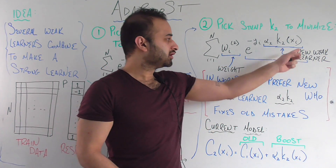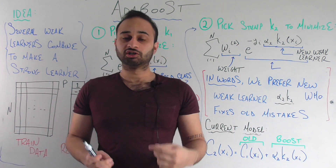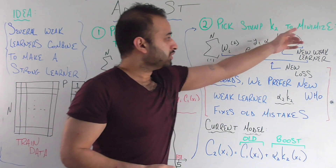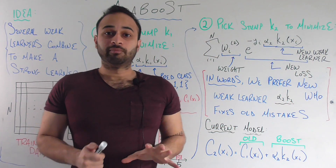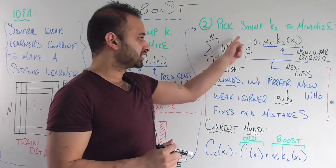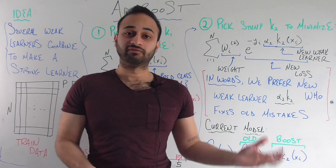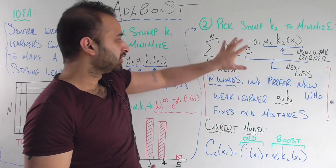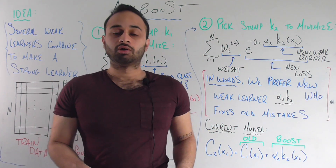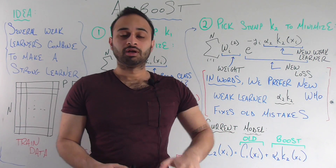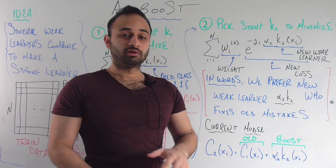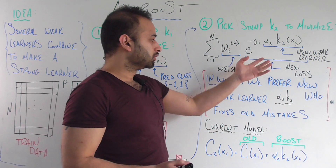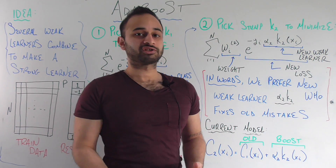So if we're using the new weak learner alone, this is the loss we would get on each observation x i. So what does it mean to minimize this whole quantity? It means that for observations that we were doing really poorly on previously — which are going to have high weights, so observations with big w i's — we need the next term to be very small, which means that the new loss attributed to the new classifier has a low loss on things that we were not doing very well at in the past.